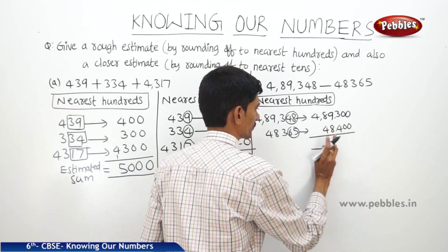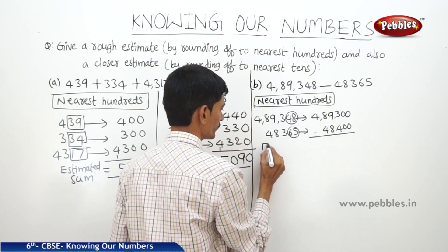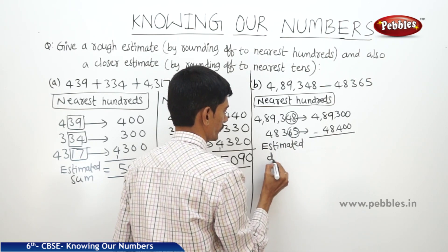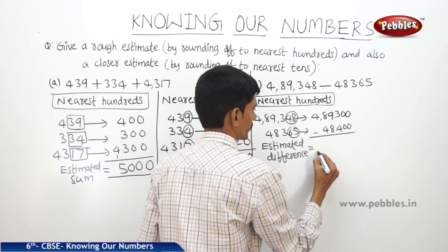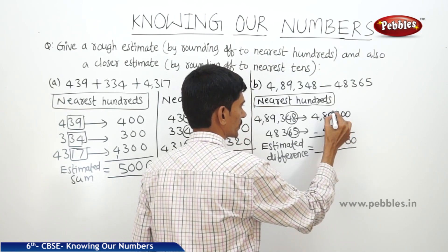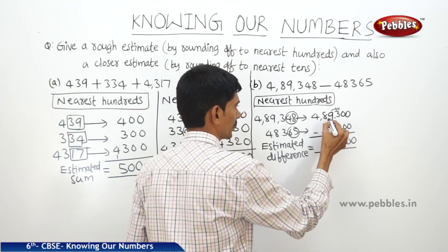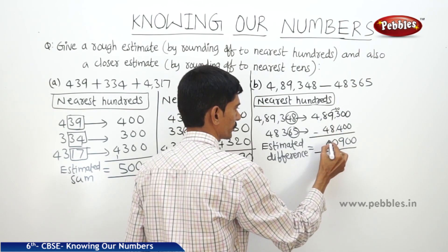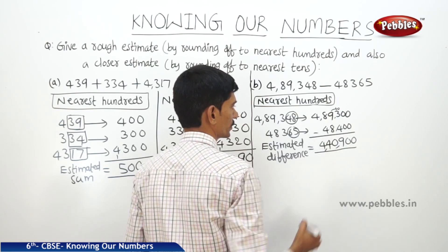Now the estimated difference. So this is 0 minus 0, 0 minus 0. Then carry: 10 plus 3 is 13, 13 minus 4 is 9. And here 8 minus 8 is 0. So 8 minus 4 is 4. Then 4. So it is 4,40,900.